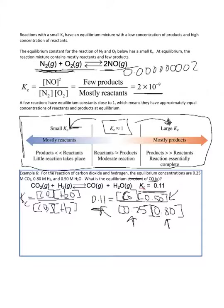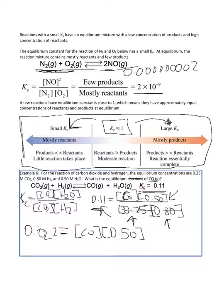First, clear out the denominator on the right-hand side by multiplying both sides by whatever's in the denominator. So we have 0.11 multiplied by 0.25 and by 0.80 to get them out of the denominator. I get 0.022 equals CO times 0.50. Now divide both sides by 0.50.